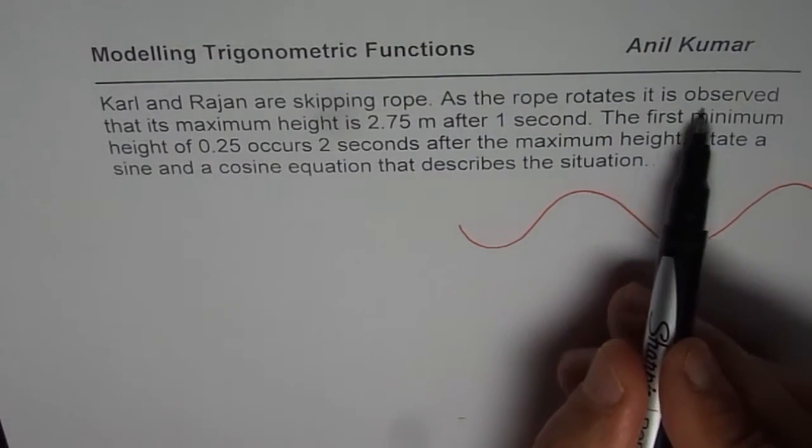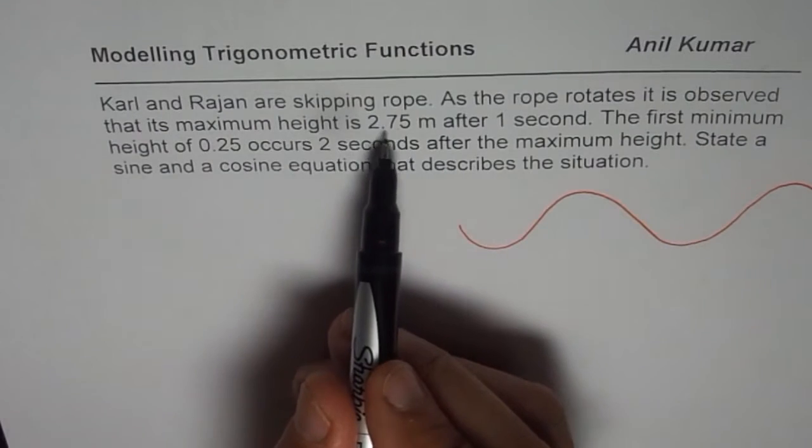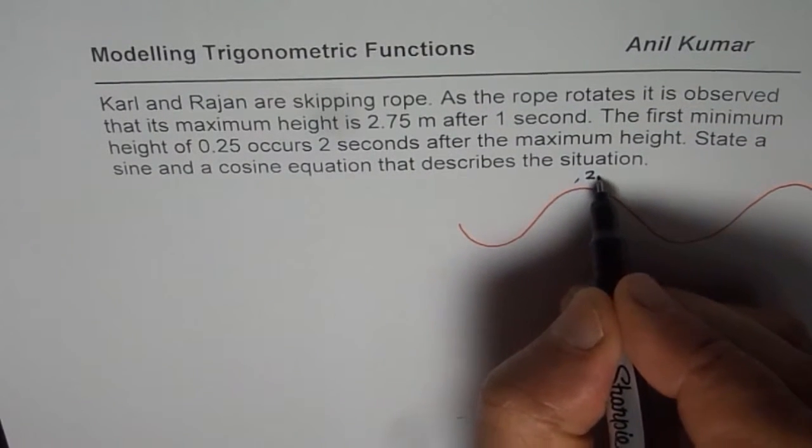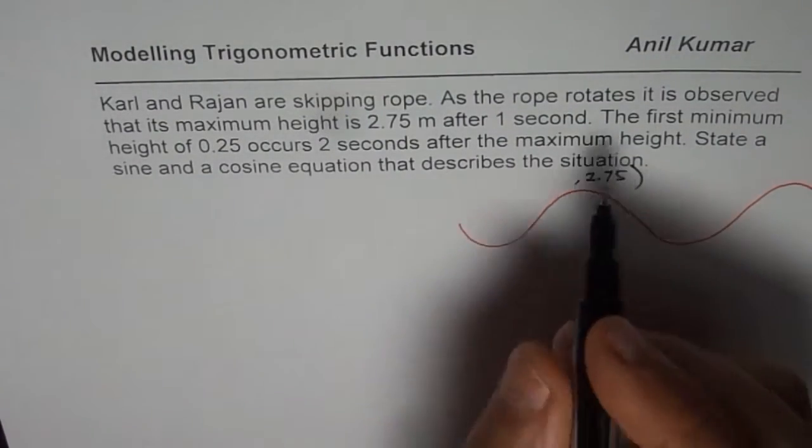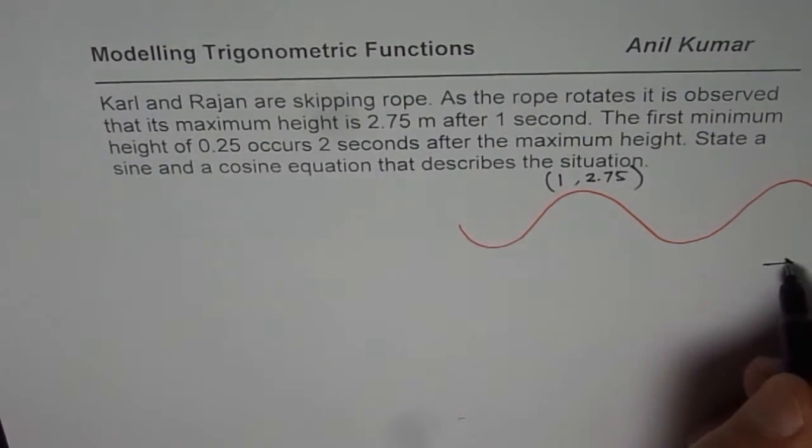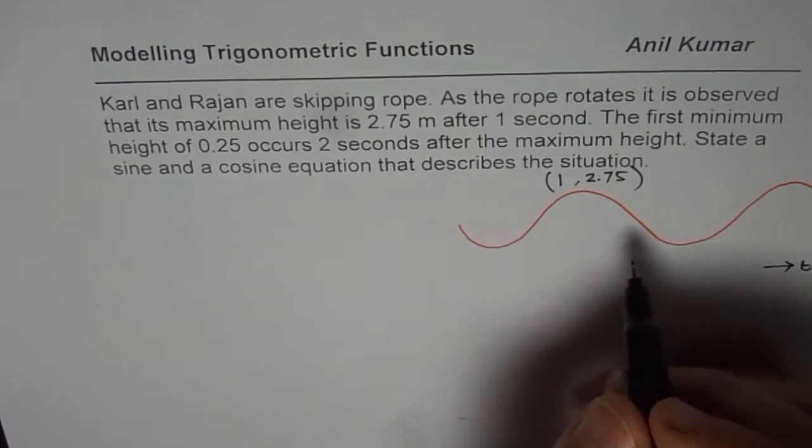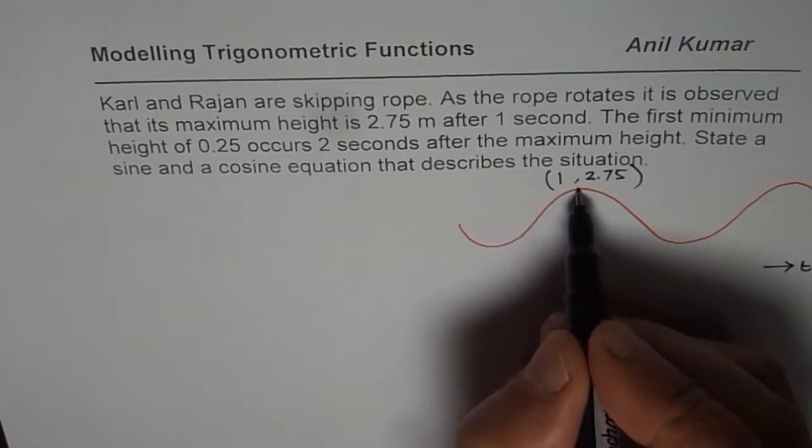As the rope rotates, it is observed that its maximum height is 2.75. So height is 2.75. We are writing 2.75 as the y value. After 1 second, the x value is 1. We have t on this side and height in meters above. So that becomes the coordinate point for maximum.